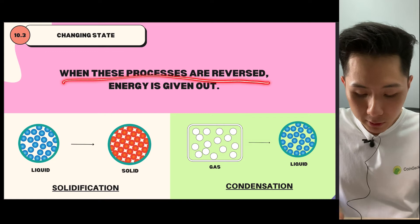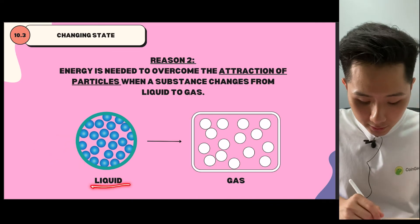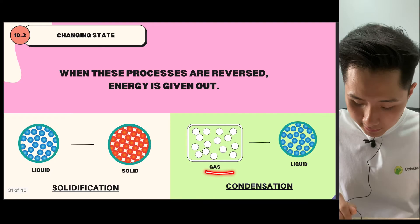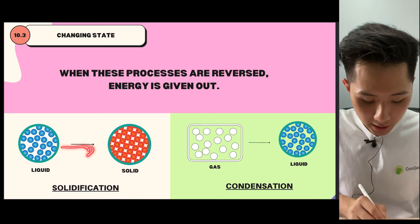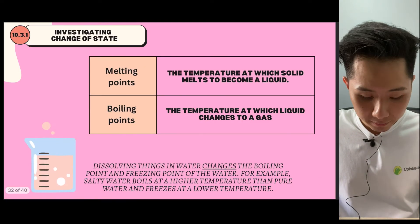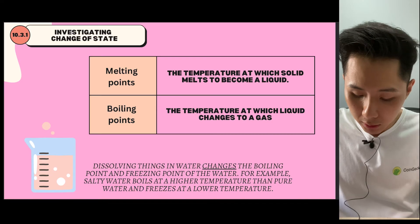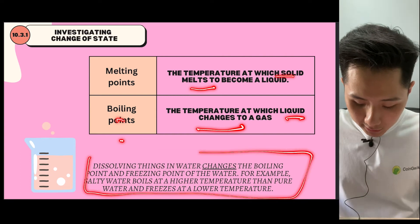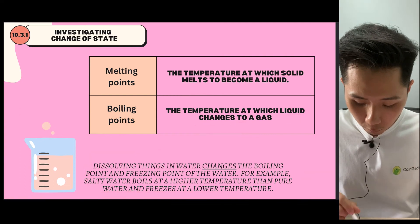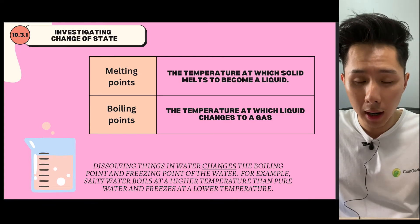When solid changes to liquid, we use the term 'break bonds'. When liquid changes to gas, energy is used to overcome the attraction of particles. If these processes are reversed, energy will be given out. When gas condenses into liquid, or when liquid solidifies into solid, energy is given out. Two important terms: melting point is the temperature at which solid melts, and boiling point is when liquid changes to gas. When you dissolve things into water, it changes the boiling point and freezing point — for example, salt water boils at a higher temperature than pure water and freezes at a lower temperature.